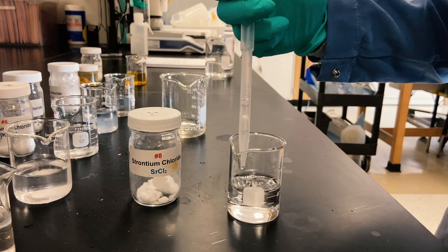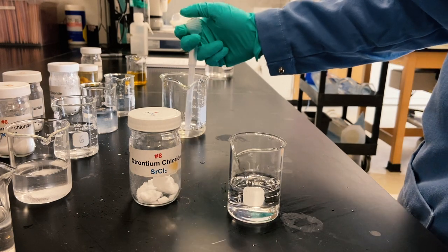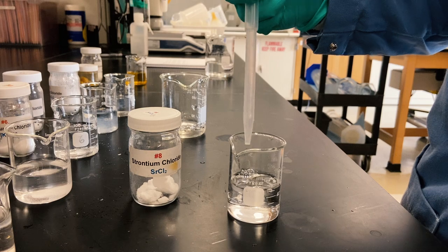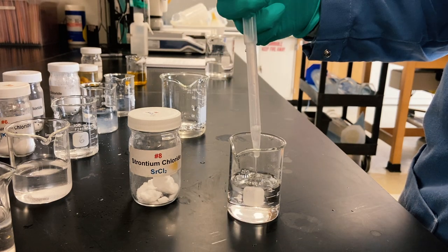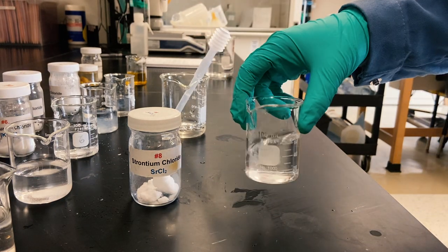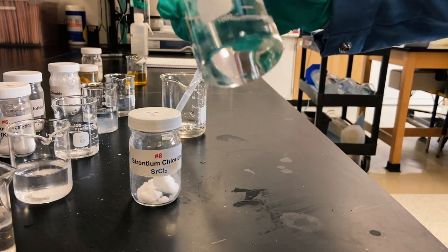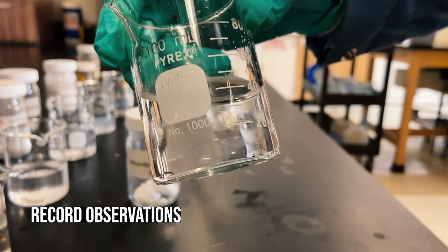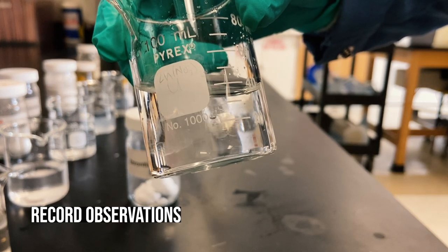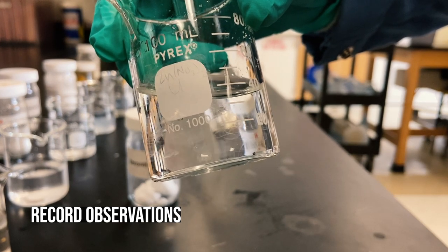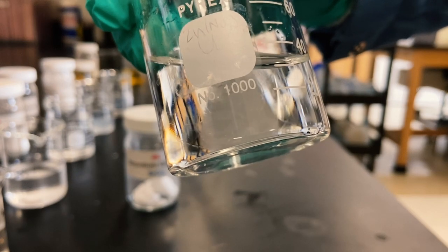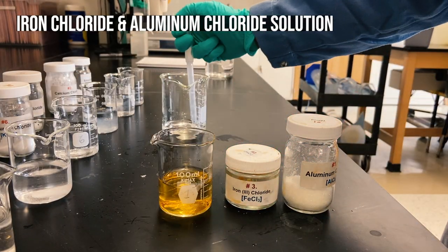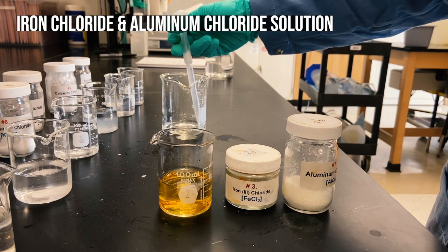And you guys can also find charts of the cation and anion sizes like I was mentioning before. You should be able to find that online to compare. And here's the strontium chloride, kind of hard to see but we've got some little polymers floating around in there. They look like little jellyfish. It's pretty cool.